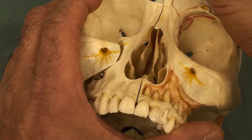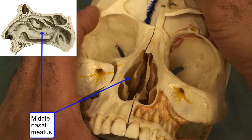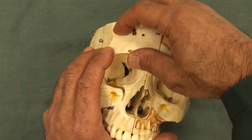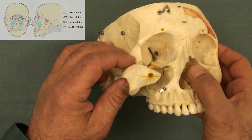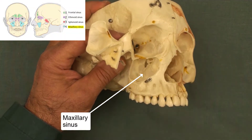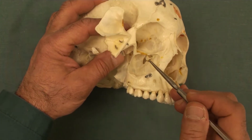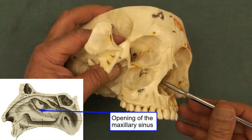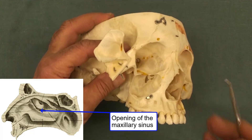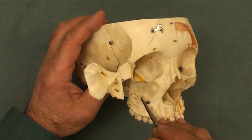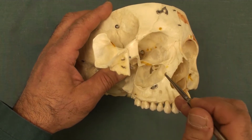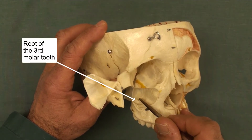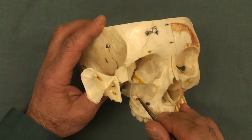The frontal sinus opens into the middle meatus on the lateral wall of the nasal cavity, same as the other sinuses. Now I'm going to close the frontal sinus and open the maxillary sinus, which is the largest paranasal sinus. That is the opening of the maxillary sinus into the nasal cavity. Good to know that the floor of the maxillary sinus is well below the opening of the sinus into the nasal cavity. Interestingly, you can see the root of one of the molars on the floor of the sinus.